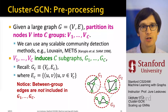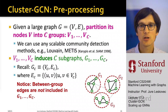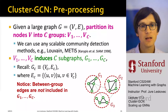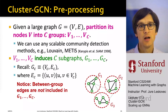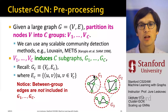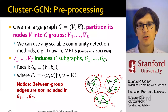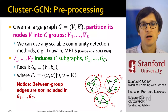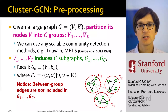Given a large graph, we partition it into C groups using a scalable community detection method like Louvain, Metis, or BigClam. We then take an induced subgraph on each subset of nodes. These induced subgraphs include all edges between members of the group. Edges that go across subgraphs — between-group edges — are dropped. So the subgraphs G1 to GC that we sample will not include cross-group edges.